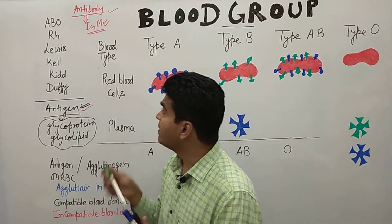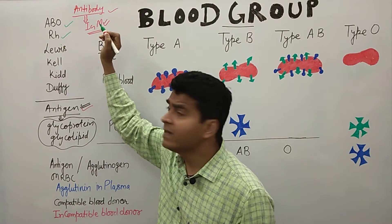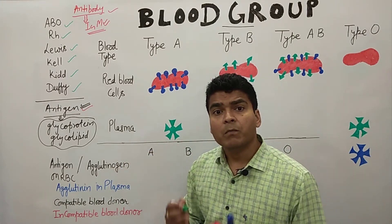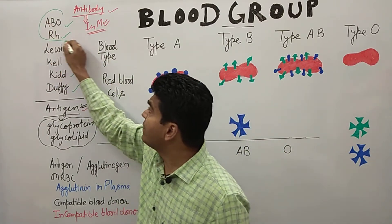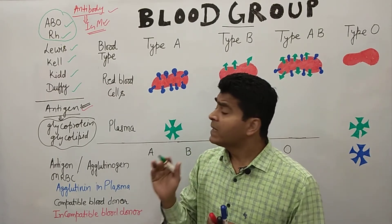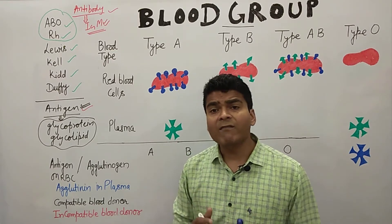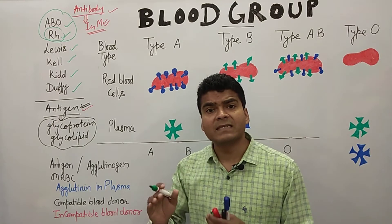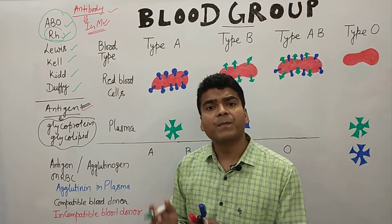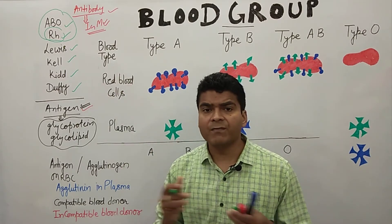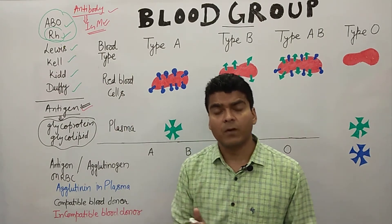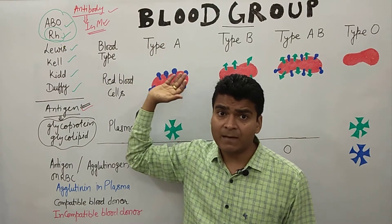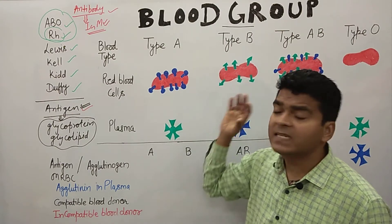The most famous blood groups are the ABO type and the Rh type, as well as Lewis, Kell, Kidd, and Duffy. Most of the world classifies blood by the ABO and Rh systems. In Asian countries, particularly India, more than 90% of people are Rh positive and the rest are Rh negative. In European countries we find more Rh negative individuals compared to Asian countries.